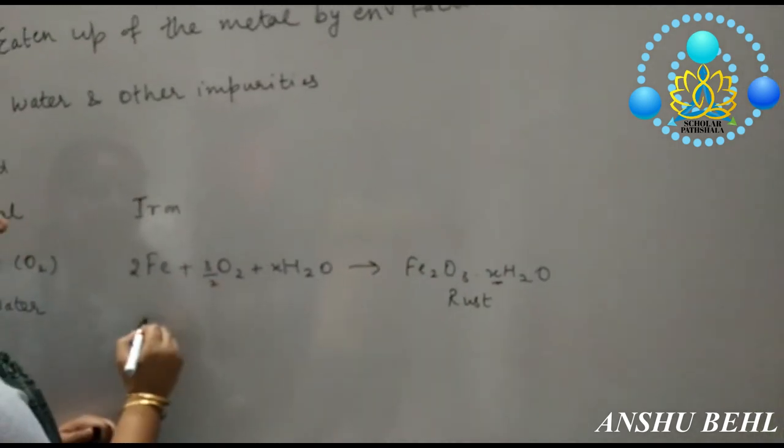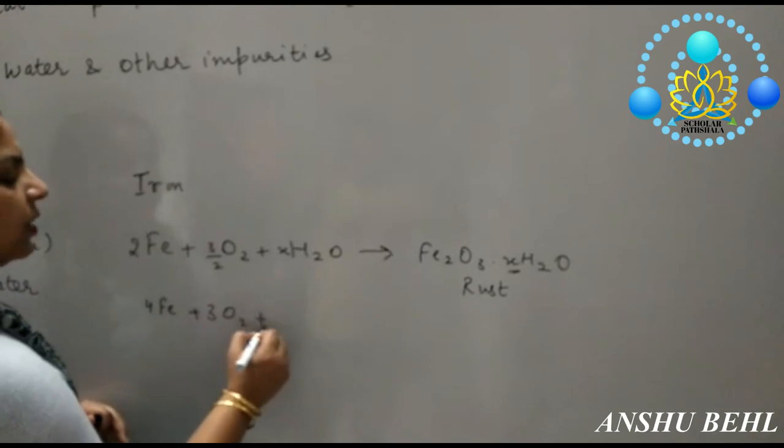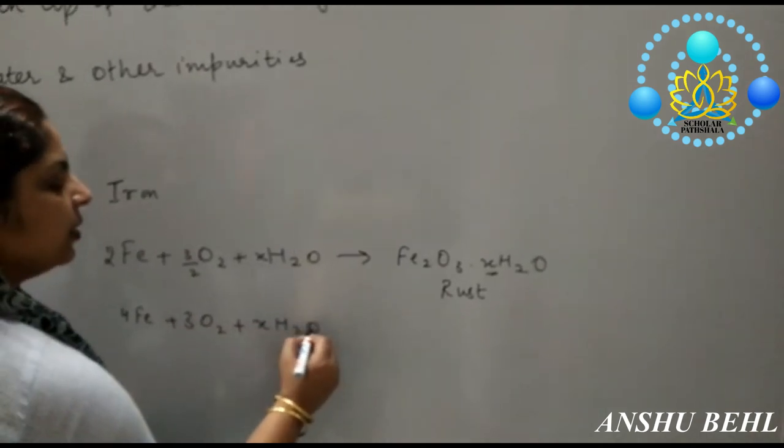Or you can balance it in this way, 4Fe plus 3O2 plus X water molecules can give you rust.